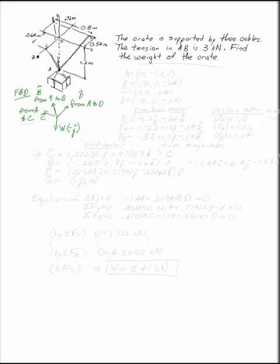The next thing we want to do is figure out where these points are. Point A is at (0, -1.2, 0). B is (-0.72, 0, -0.54).